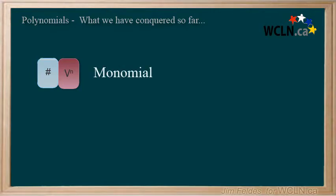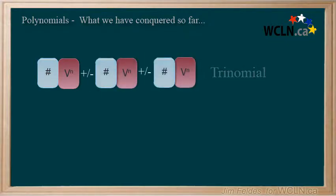A single term equals a monomial, two terms is a binomial, and if there are three terms, we call it a trinomial. Beyond that, we would simply refer to it as a polynomial.